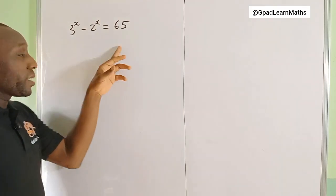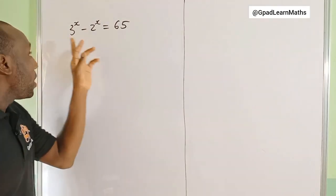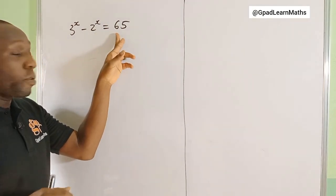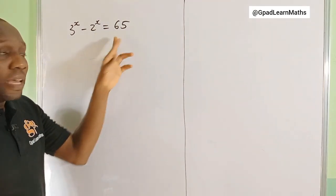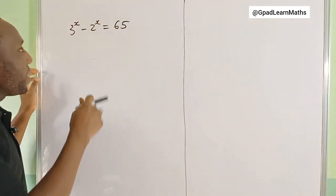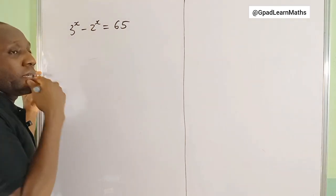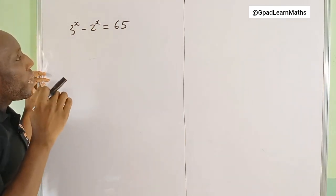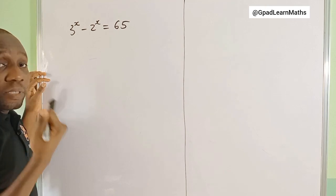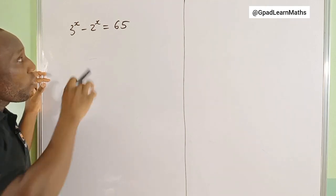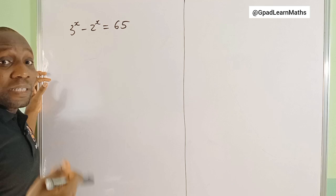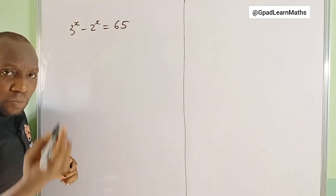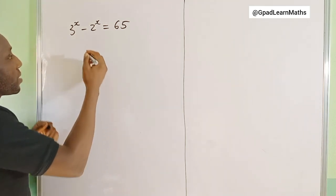Hello friends, let's solve this exponential equation: 3 raised by x minus 2 raised by x is equal to 65, and we need to find the value of x. So what do we do first? I'm trying to see how we can convert this to a quadratic equation.